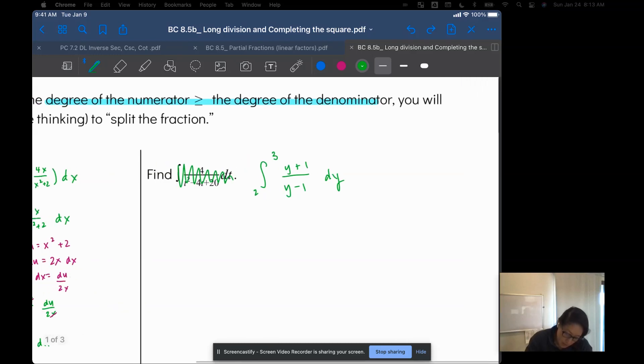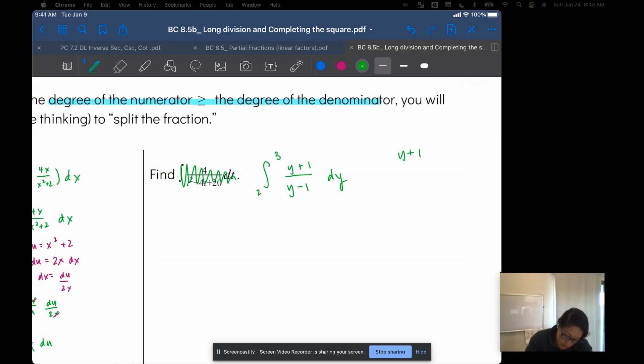I'll do it on the side. Y plus 1 divided by y minus 1. So y divided by y is 1. Distribute. Change the signs. I end up with 0 and 2. So plus 2 over y minus 1.